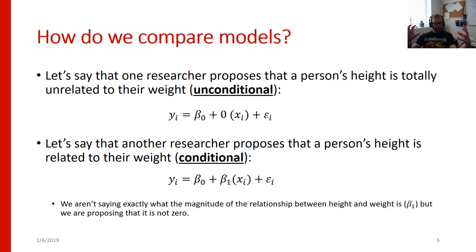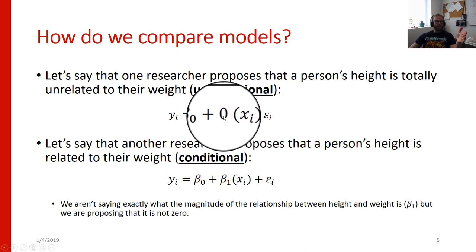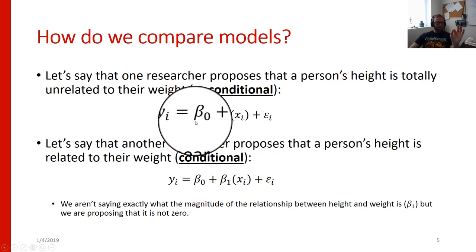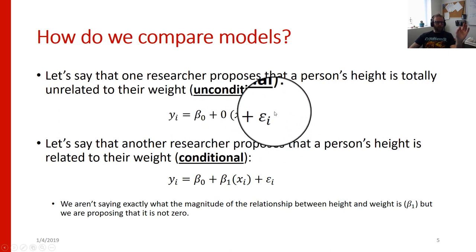Then once we have these models as we said there are going to be trade-offs between how complicated our model is and how much error it could potentially explain. So there's an important question of how do we actually compare these models. Well let's say that one researcher proposes that a person's height is totally unrelated to their weight. They propose an unconditional model of height in which height represented by y sub i is a function of some intercept and is not modified by the person's weight. So weight represented by x sub i is getting multiplied by 0. So effectively weight has no influence on a person's height because regardless of what your weight is it goes to 0. We're going to estimate beta this one value for everyone. And sure we might be off which is why we have epsilon sub i but the argument is that this unconditional model is the best approximation of a person's weight or sorry a person's height.